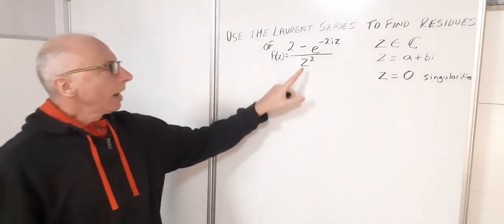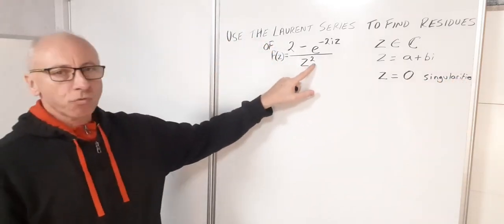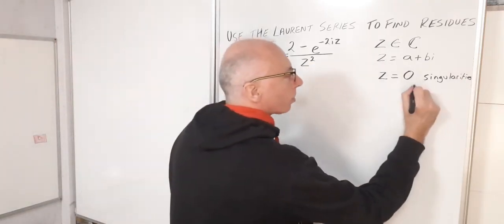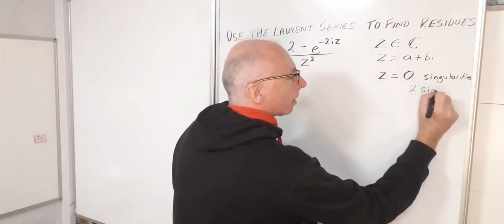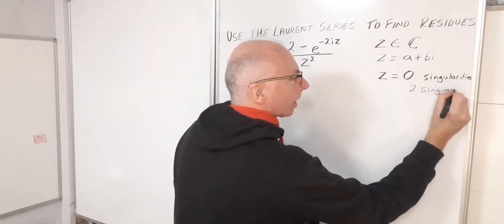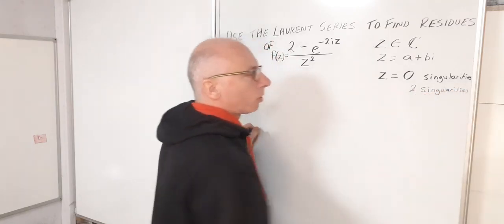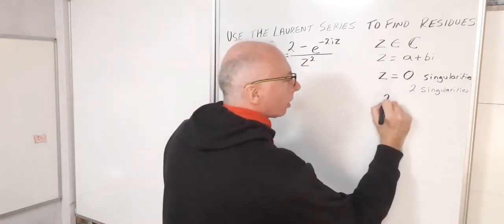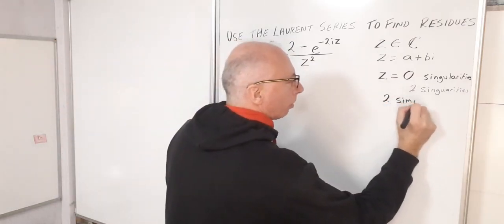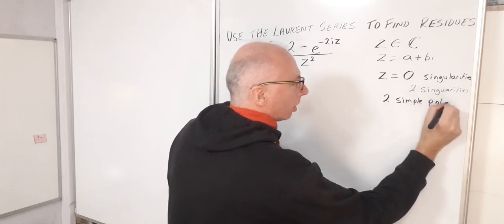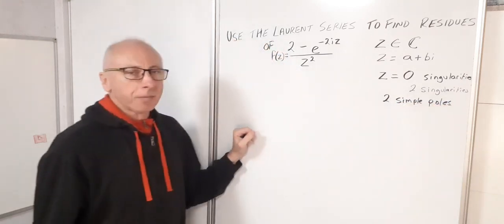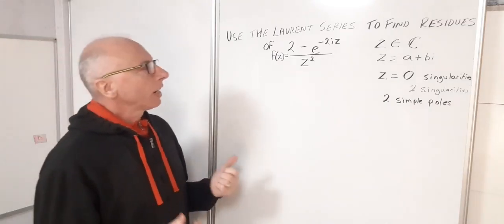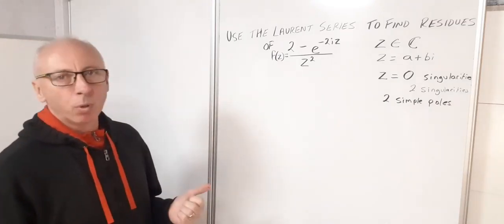Since the denominator is raised to the power of 2, there are 2 singularities. In this case they're called simple poles because we have z squared in the denominator — so we have 2 simple poles. Now what we want to do is calculate the value of the residues at that point.